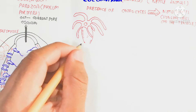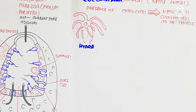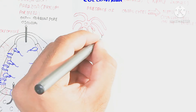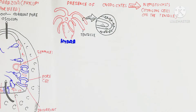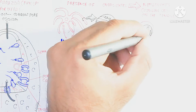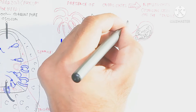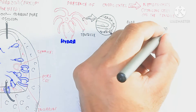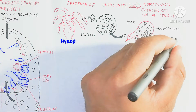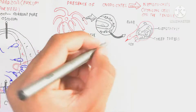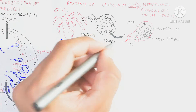The hydra contains tentacles which hold cnidocytes. These cnidocytes play an important role and contain nematocysts. Zooming into the tentacle, we can see that cnidocytes and nematocysts are present. Inside the nematocyst is a coiled thread with lids and a barb, and the coiled thread wraps around the barb. The nematocyst contains a nucleus, known as a nematocyte.